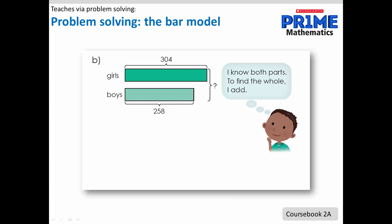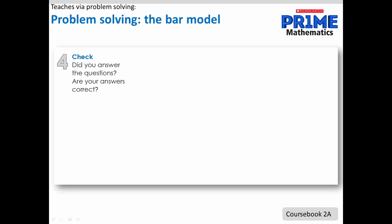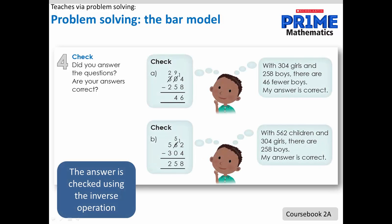In the second part of this problem, the number of boys is now known. So the two parts that are known are the number of girls and boys. What the student is now looking for is the whole, which is the total number of children. To find this answer, the student needs to add. Once again, the pictorial and abstract are shown together to find the answer. Then, as step four in the problem solving process, students check and validate their answers. In this case, they use the inverse operations to verify that their answers are correct.